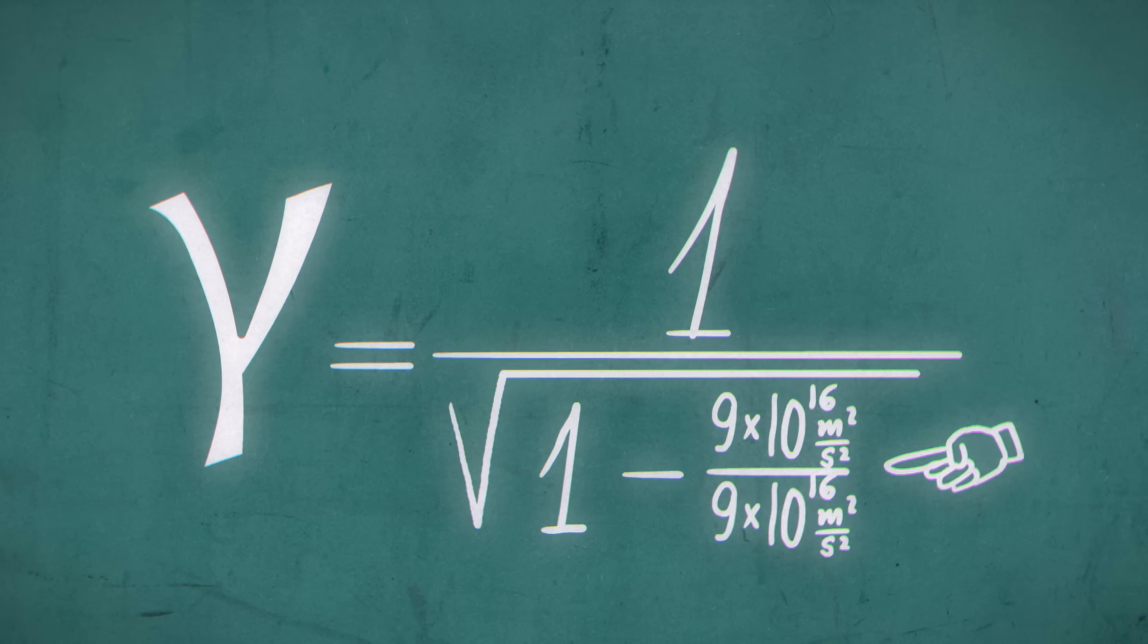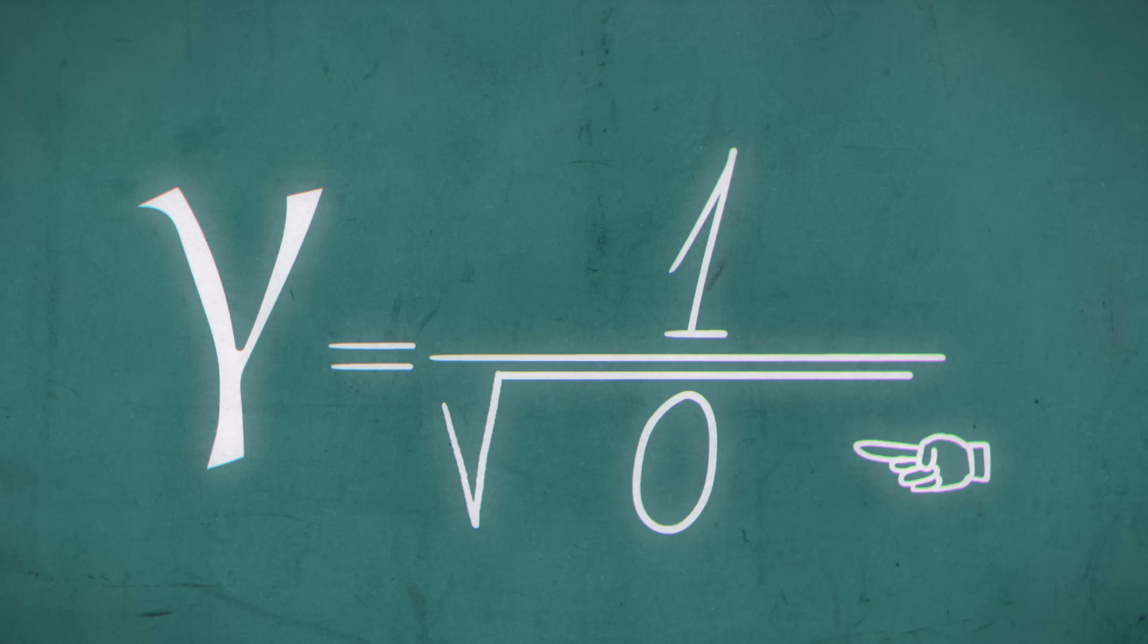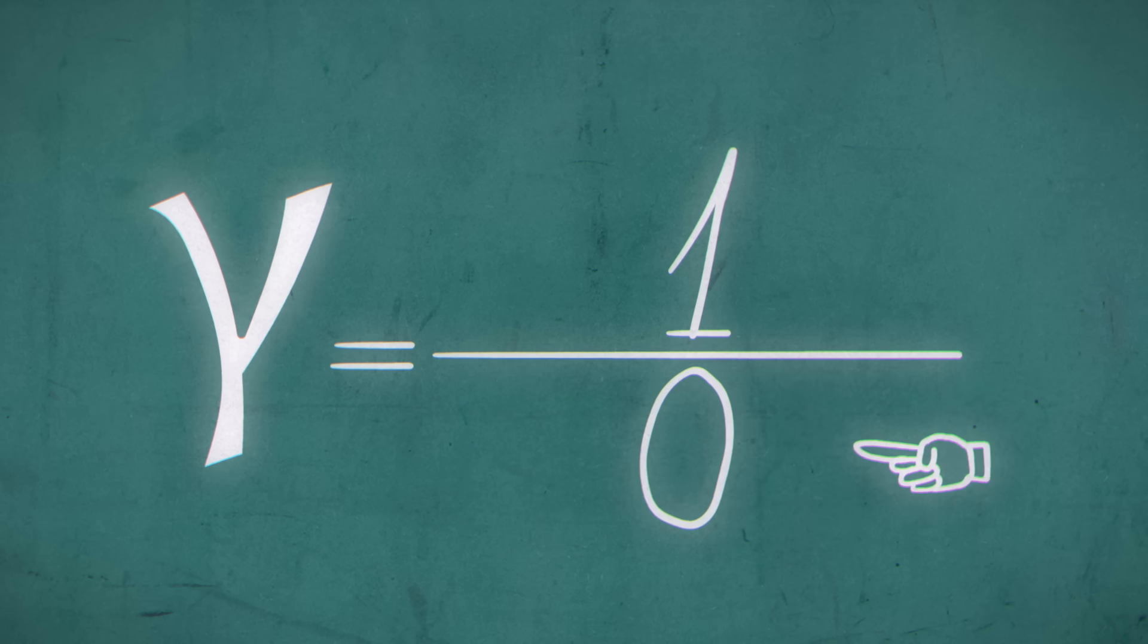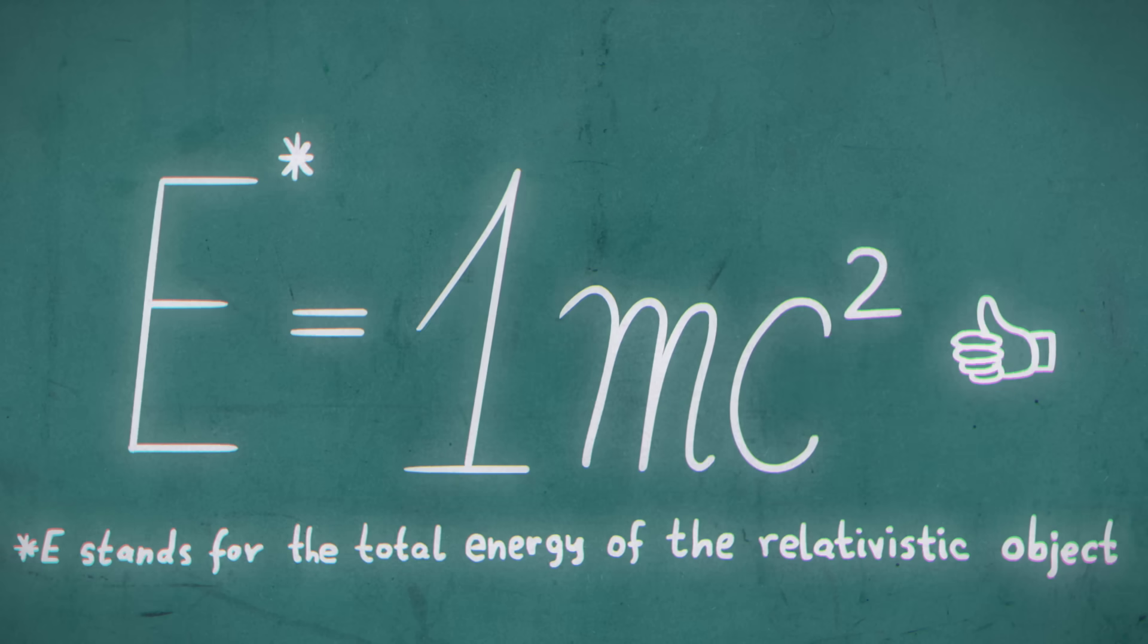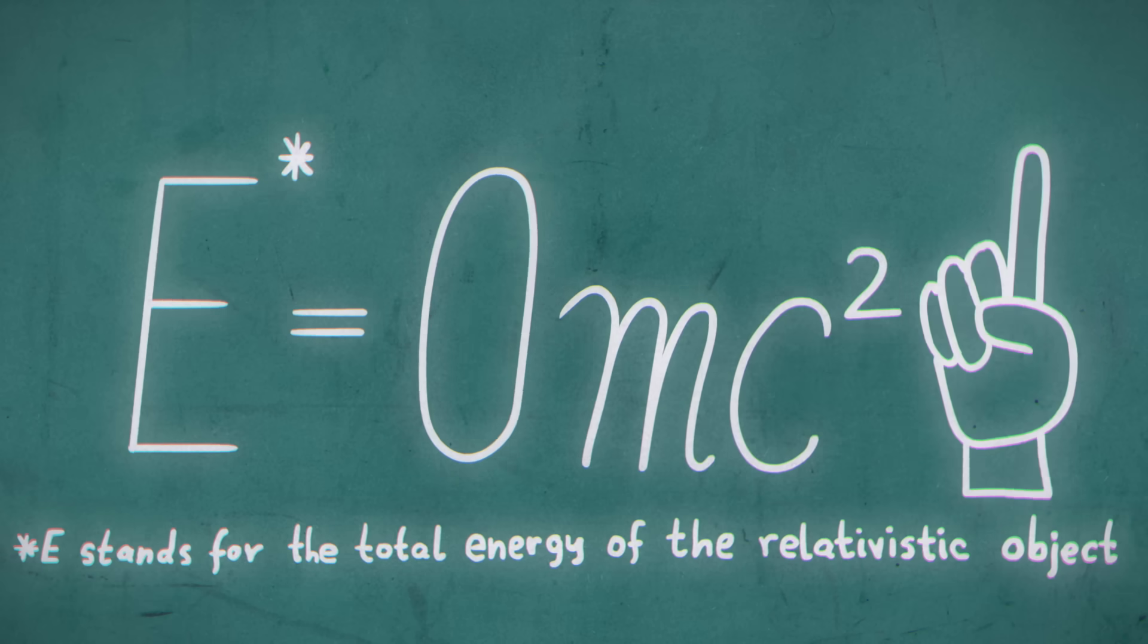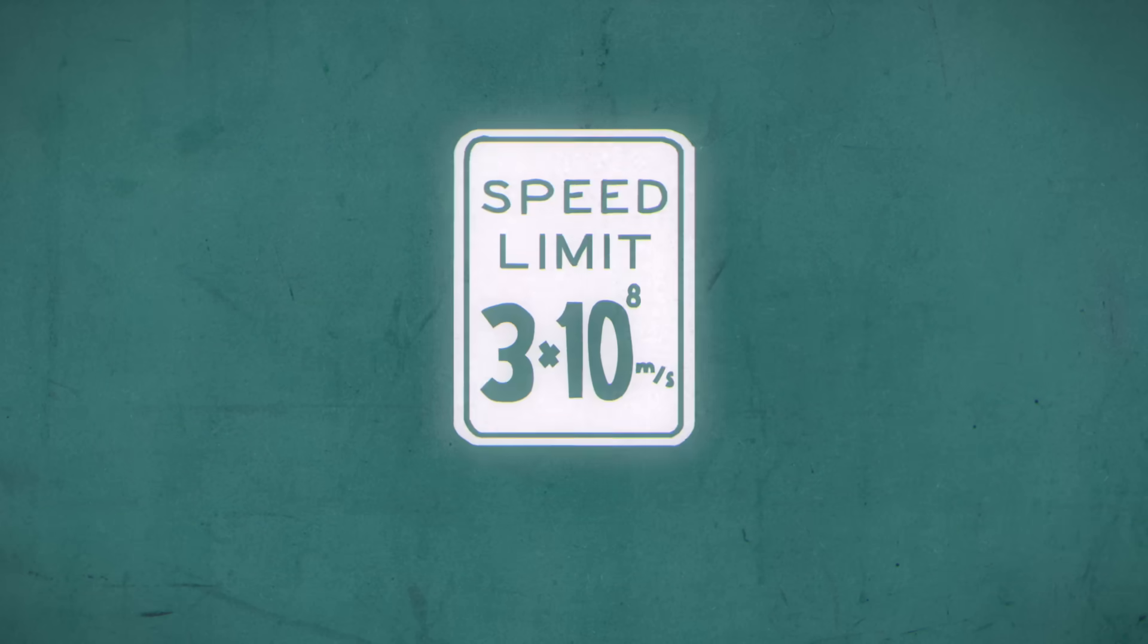However, when an object is moving fast enough, this denominator drops to 0. Since dividing by 0 is impossible, this breaks the equation and makes the variables therein mathematically impossible, hence the unbreakable speed limit.